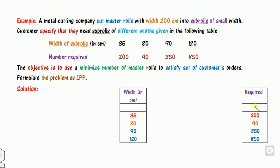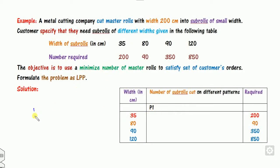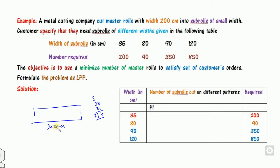Now look at one more example of the trim loss problem. This time the standard roll length is 200 cm, and you want to divide it into sub-rolls of different sizes. The maximum number of 35 cm pieces you can cut from 200 cm is 5 (since 6×35 = 210 exceeds 200), giving 5×35 = 175 cm used, with 25 cm waste as the first pattern.